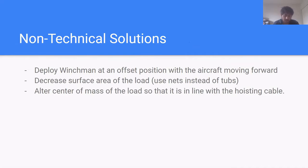From the Air and Med Rescue magazine, non-technical solutions to load spin include deploying the winchman at an offset position with an aircraft moving forward, decreasing the surface area of the load, and altering the center of mass of the load that is in line with the hoisting cable. However, these solutions may not always be possible to implement.